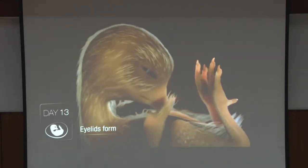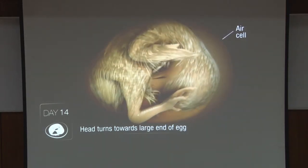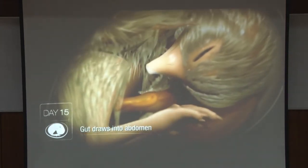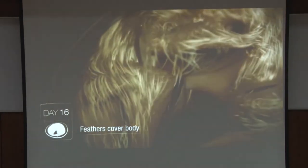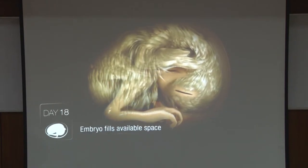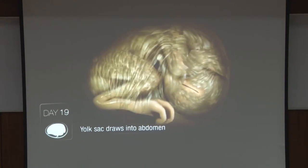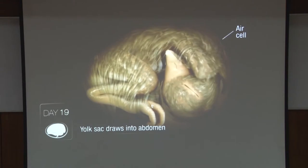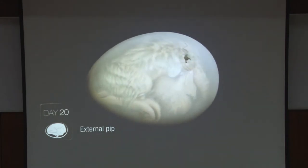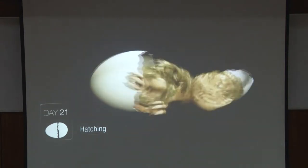Eyelids form and close the eyes, and then it starts to turn. All this time it is in the shell — the shell is porous to oxygen so it can get oxygen from outside. The gut goes into the abdomen, the feathers cover the body, and now it is getting ready to hatch. It will do a little pip, break the eggshell, and out comes the chick.